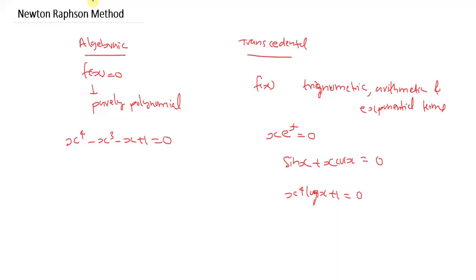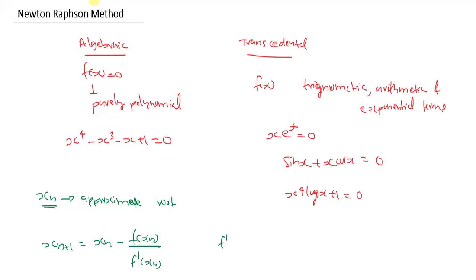Now, discussing Newton-Raphson method: if xn is an approximate root of an equation, then according to Newton-Raphson method the next root xn+1 will be equal to xn minus f(xn) divided by f'(xn), where f'(xn) denotes the derivative of f(x), that is df/dx evaluated at x = xn.